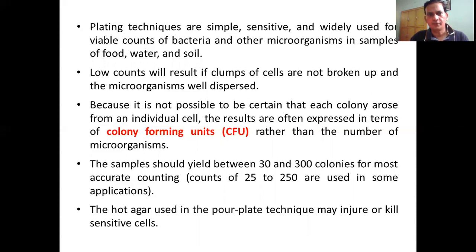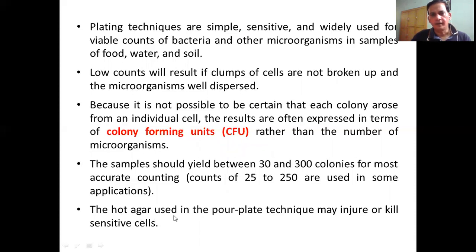Since it is not possible to be certain that each colony arises from an individual cell, we use the term Colony Forming Unit, or CFU. Instead of giving the number of bacteria directly, we report colony forming units. A sample should have between 30 to 300 colonies for the most accurate count. Another problem with the pour plate technique is that hot agar, heated up to 90 degrees, may injure or kill sensitive cells added to that medium.